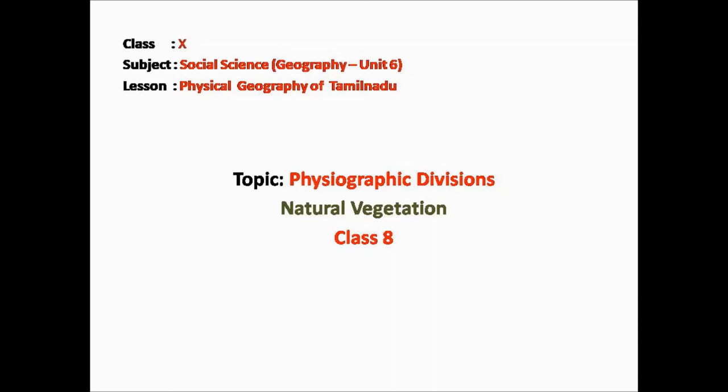Natural vegetation refers to a plant community which has grown naturally without any human support. We have seen forests with many large trees. No human is planting or sowing seeds in a forest or watering the trees there. These trees grow naturally under the climatic conditions depending on the region. This is called natural vegetation.